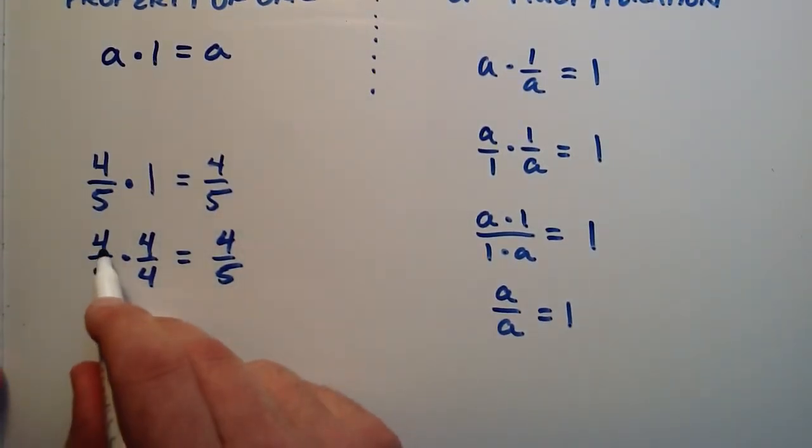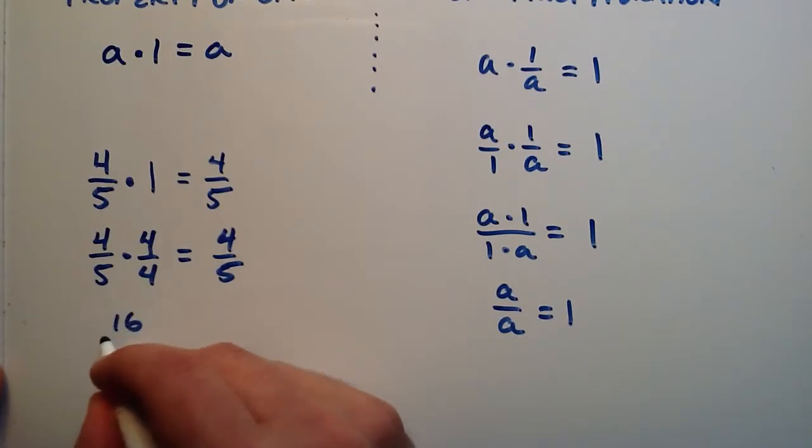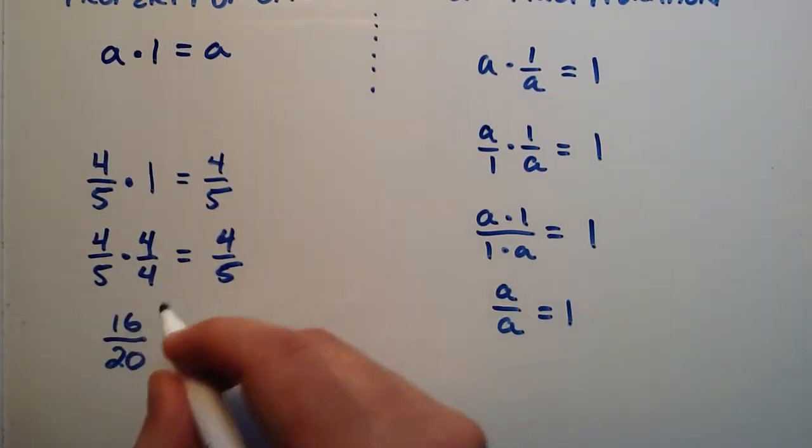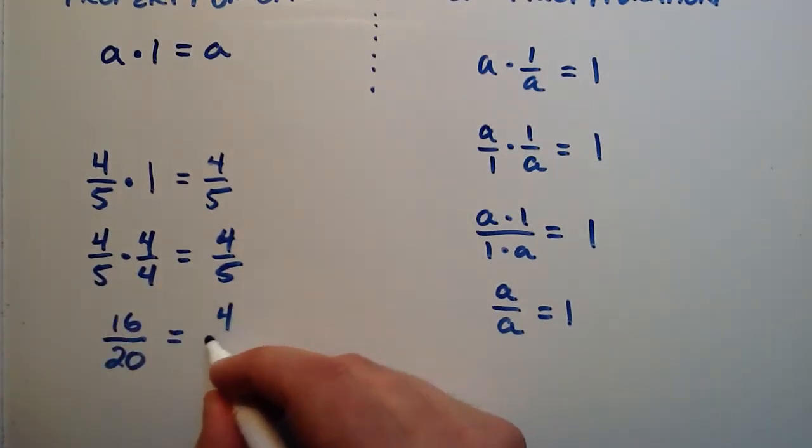So now, we can simply multiply the top together. 4 times 4 is 16. And 5 times 4 is 20, multiplying the denominator together. And we have the result, 4 fifths.